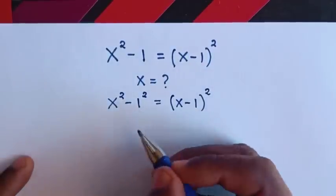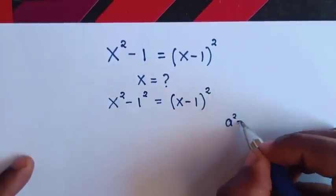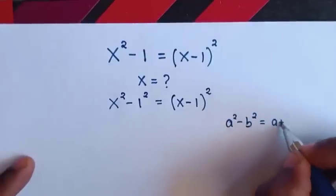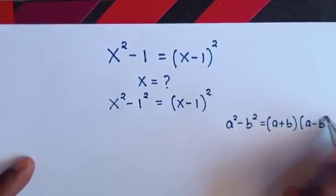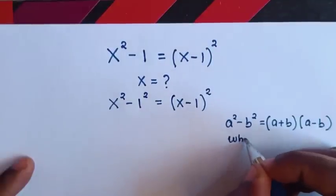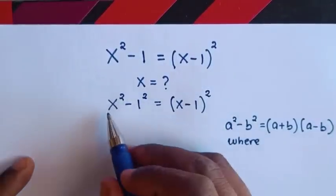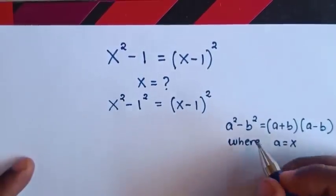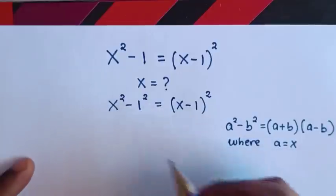Then in here, we will apply this rule which is a squared minus b squared is equal to (a plus b) times (a minus b). Whereas from a squared, when we compare with x squared, a is equal to x, and from b squared with 1 squared, b is equal to 1.